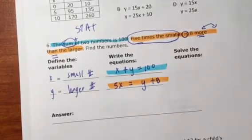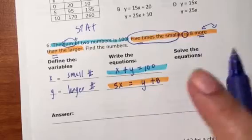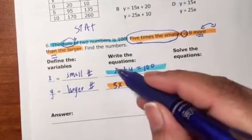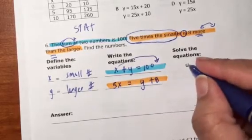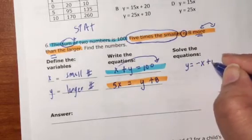The larger number is Y. So in order to solve for Y, we are going to move the X. So if we move this X over, this is Y equals negative X plus 100.